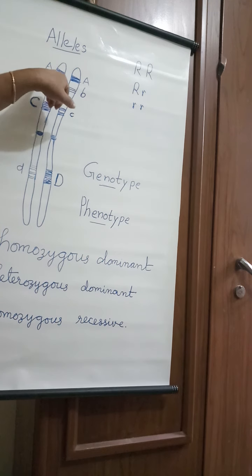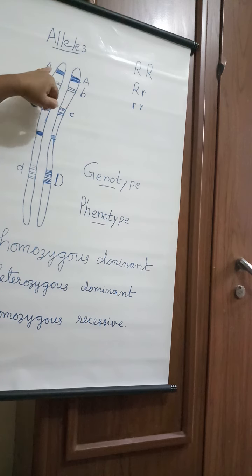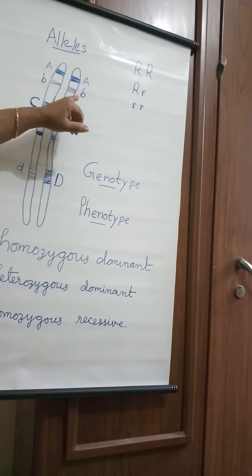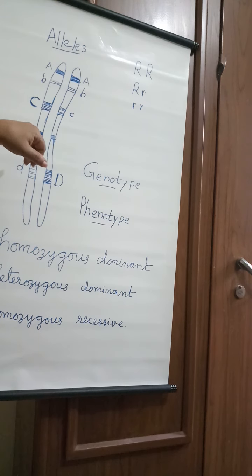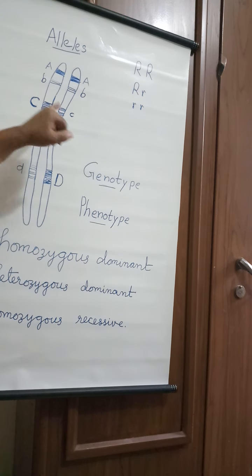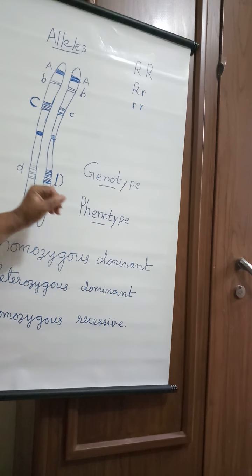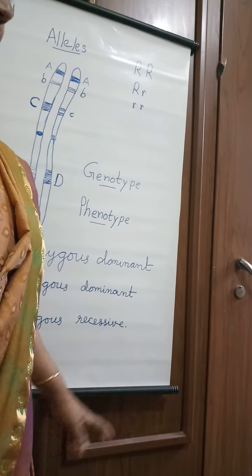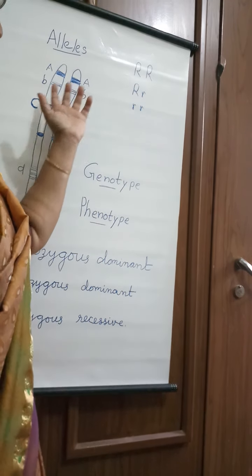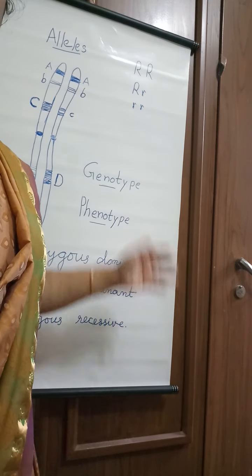Here you can see the alleles of the chromosomes. The first alleles are represented by capital A and capital B. The second allele is represented by small b and small b. The third allele is represented by capital C and small c. The fourth allele is represented by small d and capital D. In genetics, alleles are represented by capital letters and small letters.